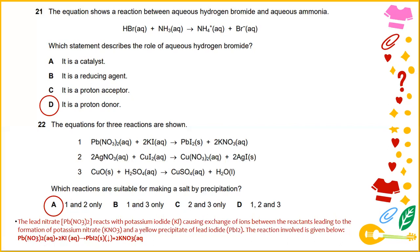Which reactions are suitable for making a salt by precipitation? Lead nitrate reacts with potassium iodide causing exchange of ions between the reactants leading to the formation of potassium nitrate and a yellow precipitate of lead iodide. The answer for this would be the reactions that make a salt by precipitation are number one and number two.